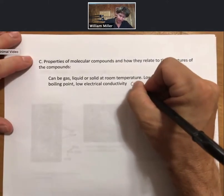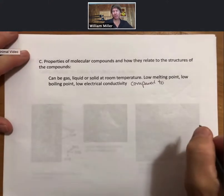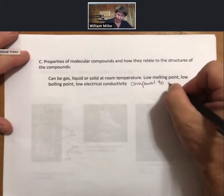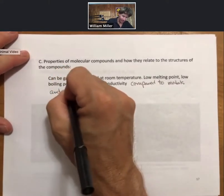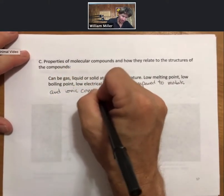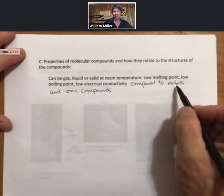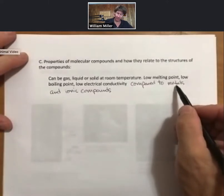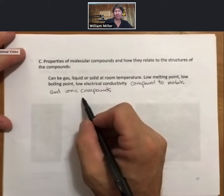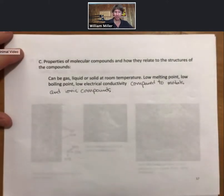So compared to metals and ionic compounds. So in metals, there are metal atoms that are the main interacting feature, and ionic compounds have ions. So contrary to that, these have molecules as their main particles.